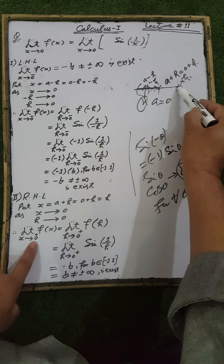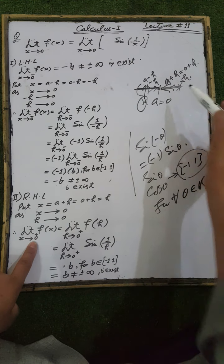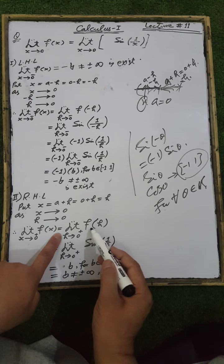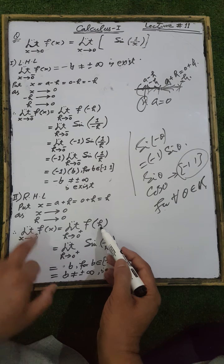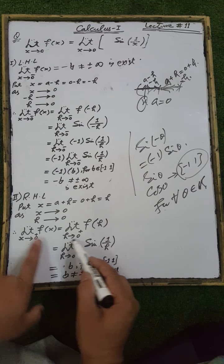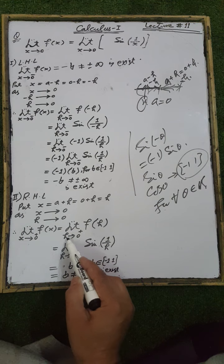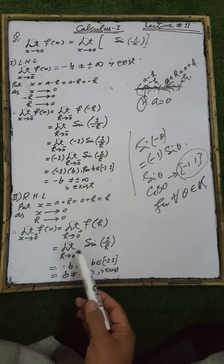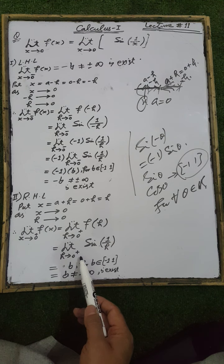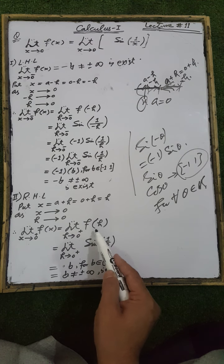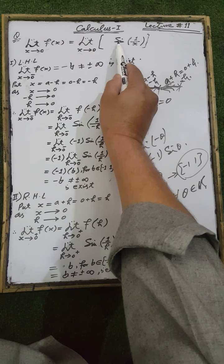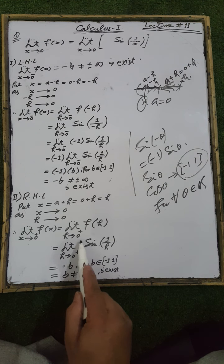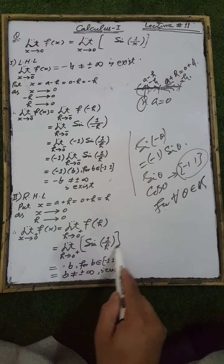Therefore, the limit of f(x) as x tends to zero from the right side of the neighborhood of point a = 0 equals the limit of f(h) — replacing x by h — as h tends to zero. This h represents the right-hand side of the neighborhood of point a = 0. This equals the limit as h tends to zero from the right side of sine of 1 over h, since the function is sine of 1 over h.